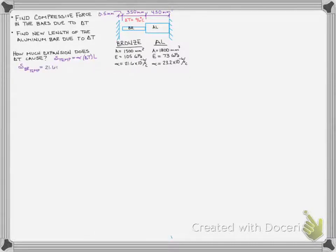So we could start with the bronze and just determine how much does the bronze want to expand due to the 96 degrees Celsius. And if we plug in our temperature and length, we find out that it wants to expand by almost three quarters of a millimeter. So basically 0.726 millimeters.